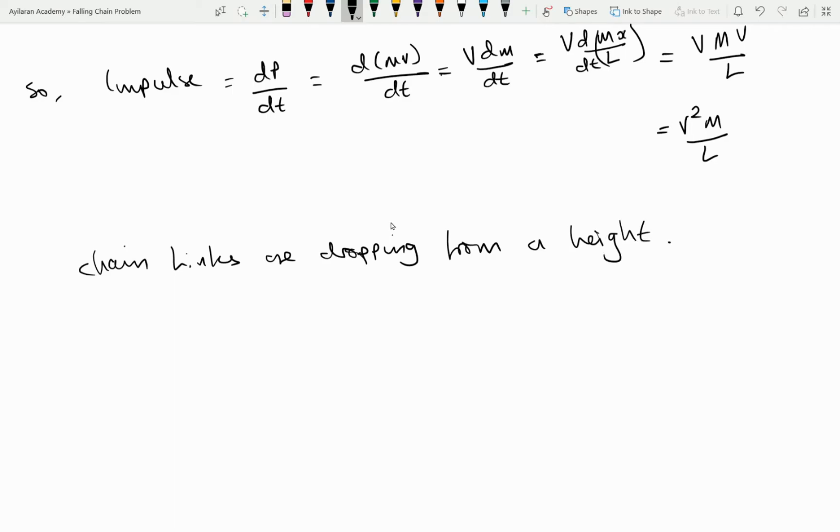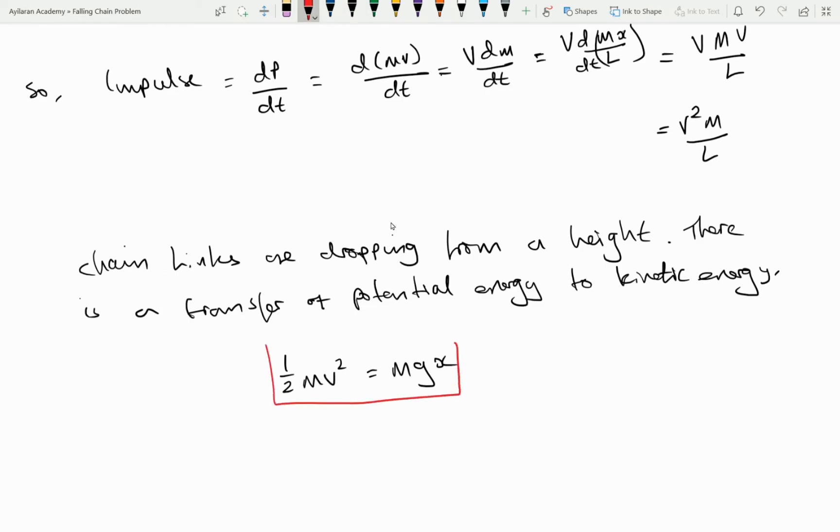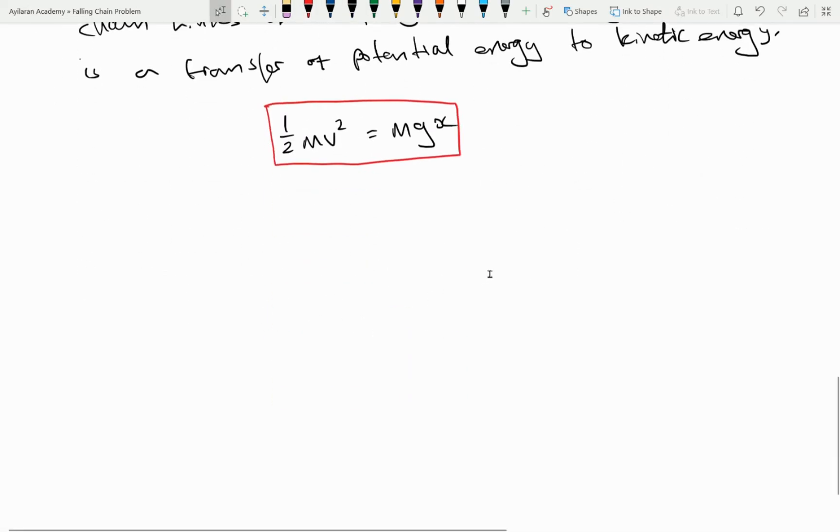All we know is that as we are dropping the chain as the chain is dropping and moving through a height which in our case is X and there is a change of energy. There is a change of gravitational potential energy at a certain height which transfers to kinetic energy as the chain moves towards the pan and speeds up due to gravity. So we use the common expression half M V squared equals M G X. Normally it's M G H.